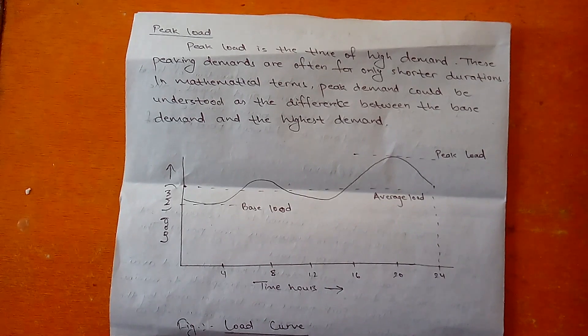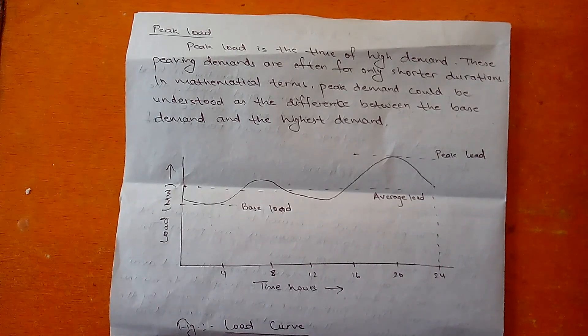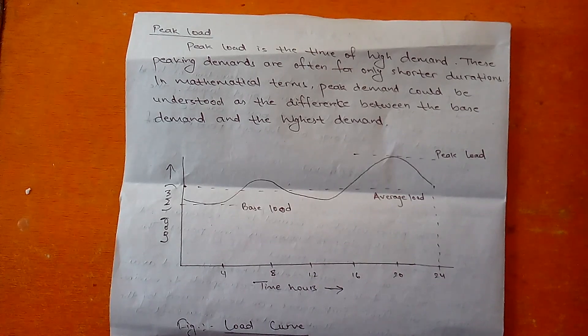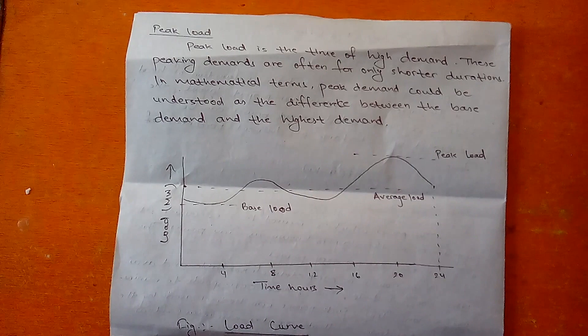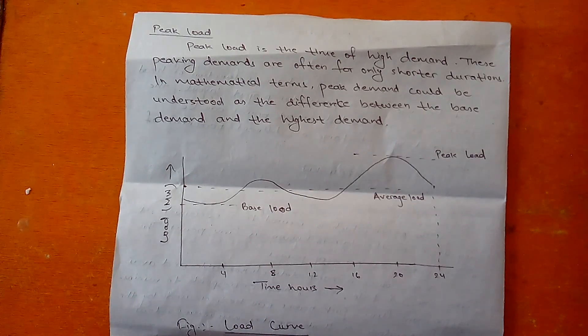The graph is known as the load curve. To sum up, we have two kinds of load: base load or min load and peak load. Base load is 100% of the time available to the consumers.